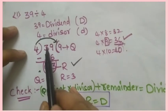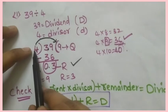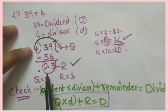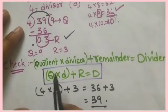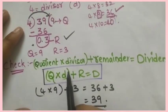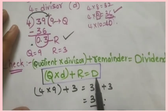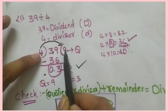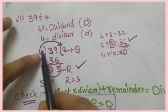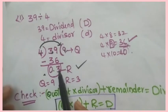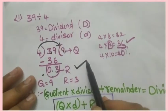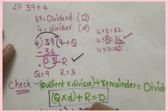We substitute into the formula: 4 nines are 36, 36 plus 3 equals 39. This is the dividend, confirming the division is correct.